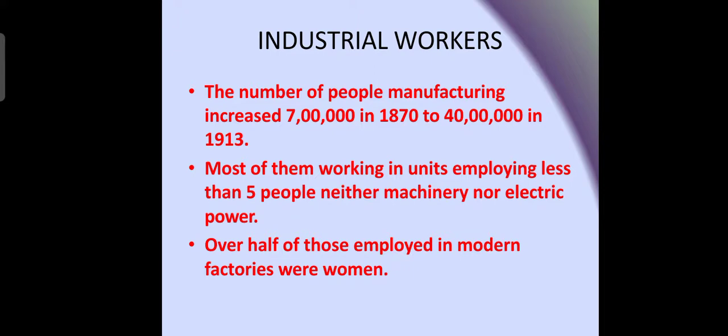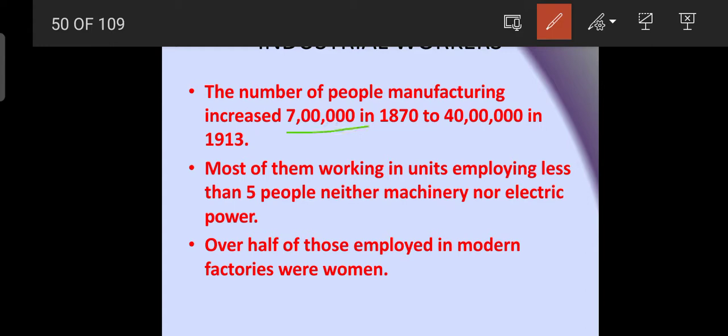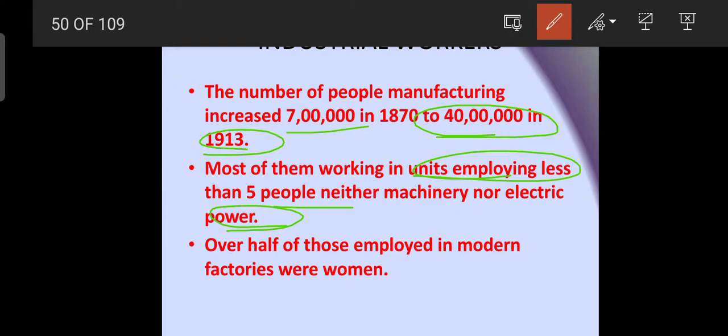Regarding industrial workers, the number of people employed in manufacturing increased from 700,000 to 4 million by 1913. Most of these people worked in small units employing fewer than five people, with neither machinery nor electric power. Over half of those employed in modern factories were women.